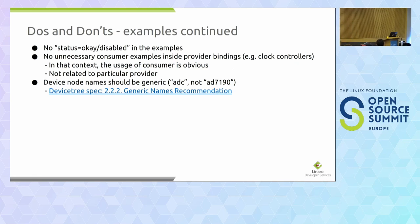Question about graph bindings: do you have advice or resources specifically for graph bindings? Sometimes the relationships between devices and the existing upstream bindings are hard to map to strange hardware. The question was specifically about one-to-many graph relationships. Unfortunately, the answer is no — I don't currently have good examples for that, but I can try to look and extend my presentation, or maybe this would be a reason to come back next year.